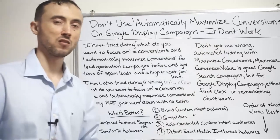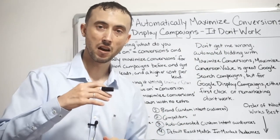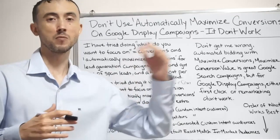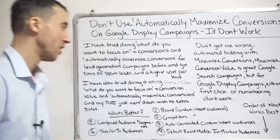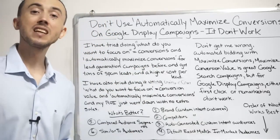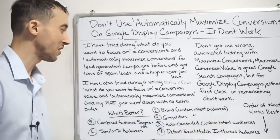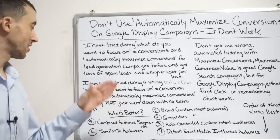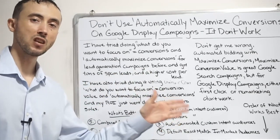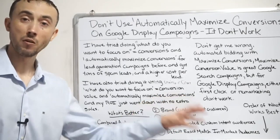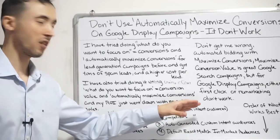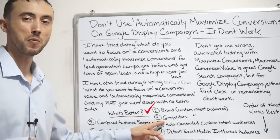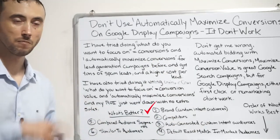Long story short, we know automatically maximizing conversions — letting Google figure out how to get customers at a higher rate or spreading the targeting wider to find more customers — doesn't actually work for display. What you want to do if you want to get more conversions, or just get display ads to work in the first place, is target using the display network strategies we routinely use at our firm. I've listed the top six things in terms of display campaign targeting, in order from most to least profitable.